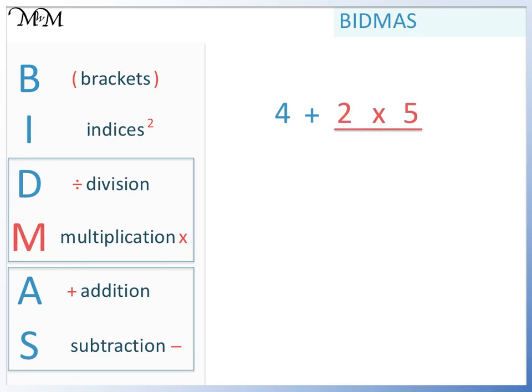2 times 5 equals 10. We rewrite this calculation with the 10 by bringing the 4 down. 4 plus 10 equals 14. So the answer is 14.